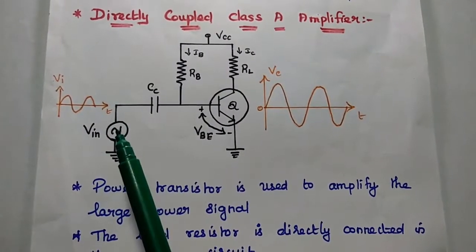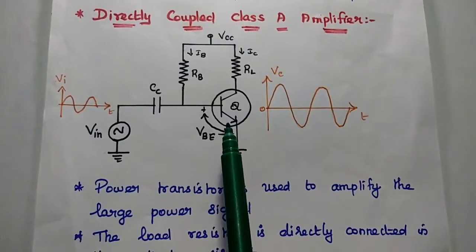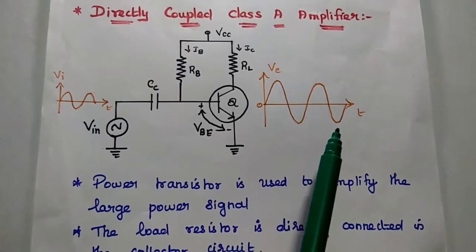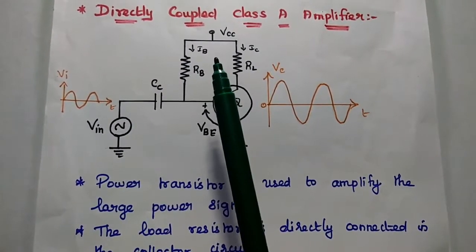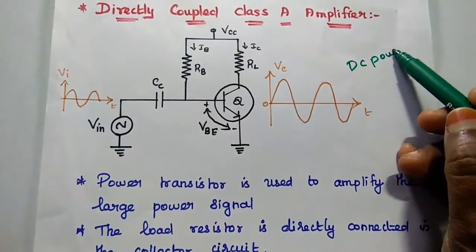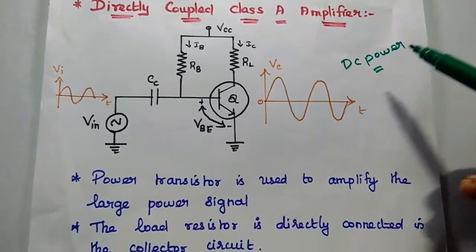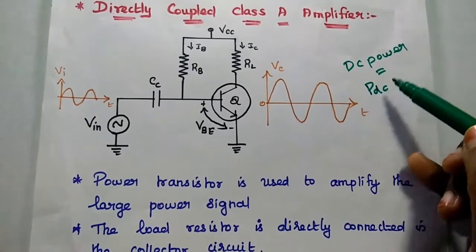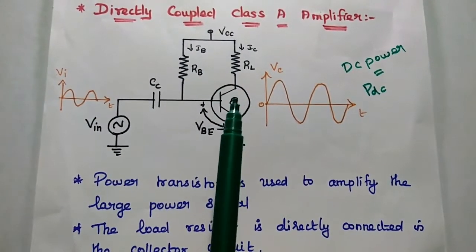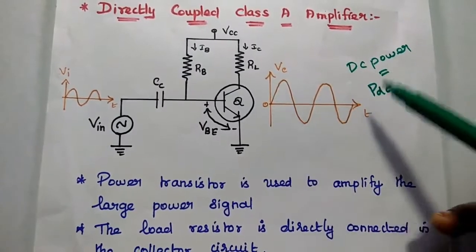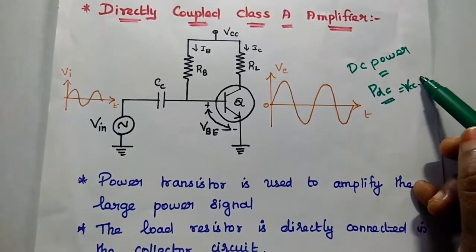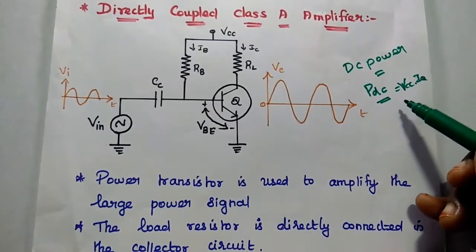Whenever an AC input signal is given to the circuit, the transistor is on for the full cycle of the input signal to produce a 360-degree amplified output signal. If we apply only VCC — the power supply — we get DC power at the output. This DC power is known as supply power. The DC supply power depends on the supply voltage alone, with no input signal. The current flowing through the collector circuit is ICQ, so DC power equals VCC multiplied by ICQ.